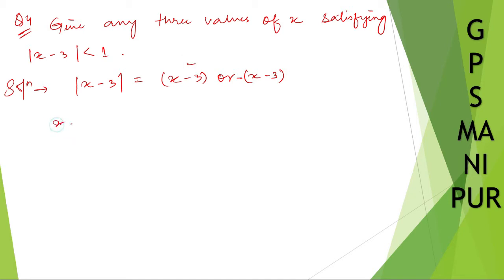Case 1: x - 3 < 1. So x < 4 when we move 3 to the other side. x is less than 3 plus 1, which is 4.